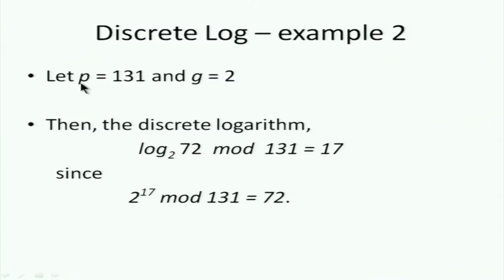Every cryptographic problem is based on the difficulty of some underlying problem — RSA is based on factorizing a large number that is a product of two large primes. We'll now see crypto schemes based on the discrete log problem. For example, with P=131 and generator G=2, the discrete log of 72 to base 2 mod 131 is 17, since 2^17 mod 131 = 72.